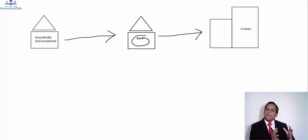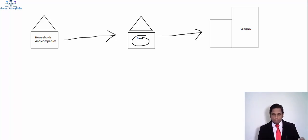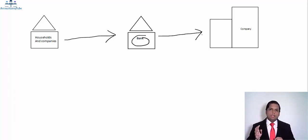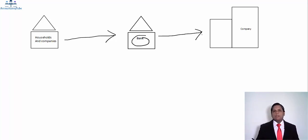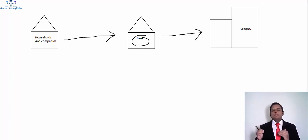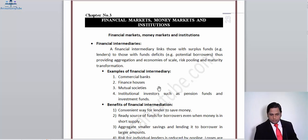What a bank is actually doing is taking funds from households and companies who have surplus funds but do not have opportunities to invest them, and giving it to companies who have the opportunity to grow their businesses but lack finance. The bank always charges the borrowing companies a higher interest rate than the rate it offers to the fund providers. The risk is pooled together in a single fund, so even if a debt holder defaults, the households and companies depositing funds will not be significantly affected.